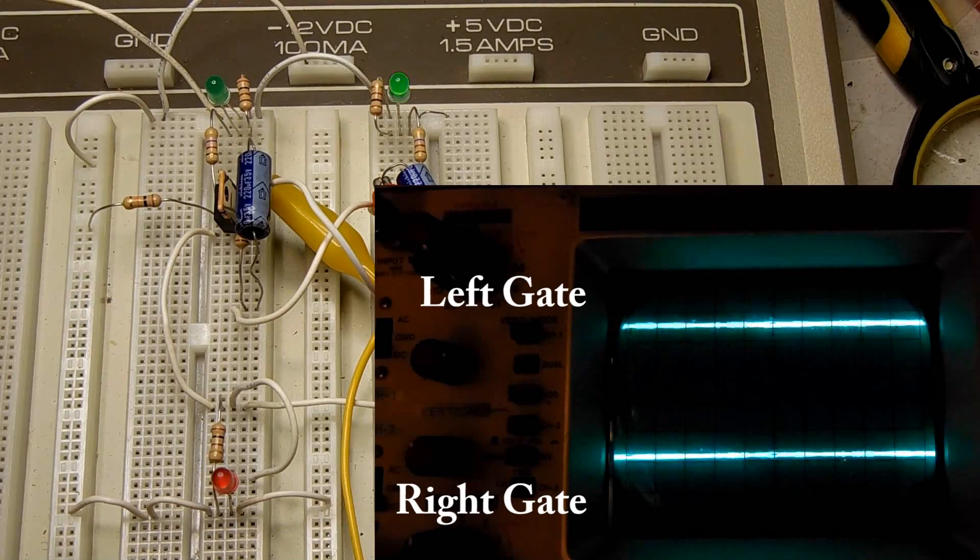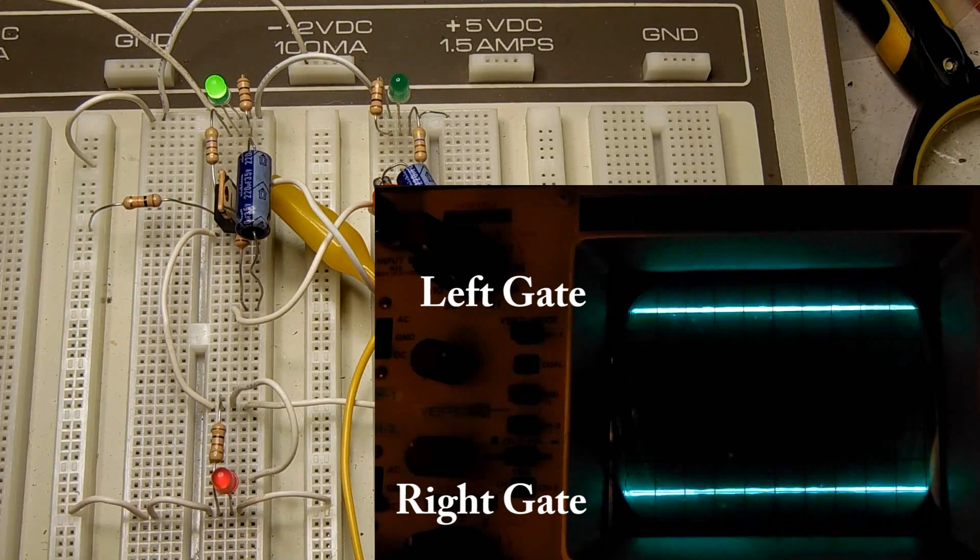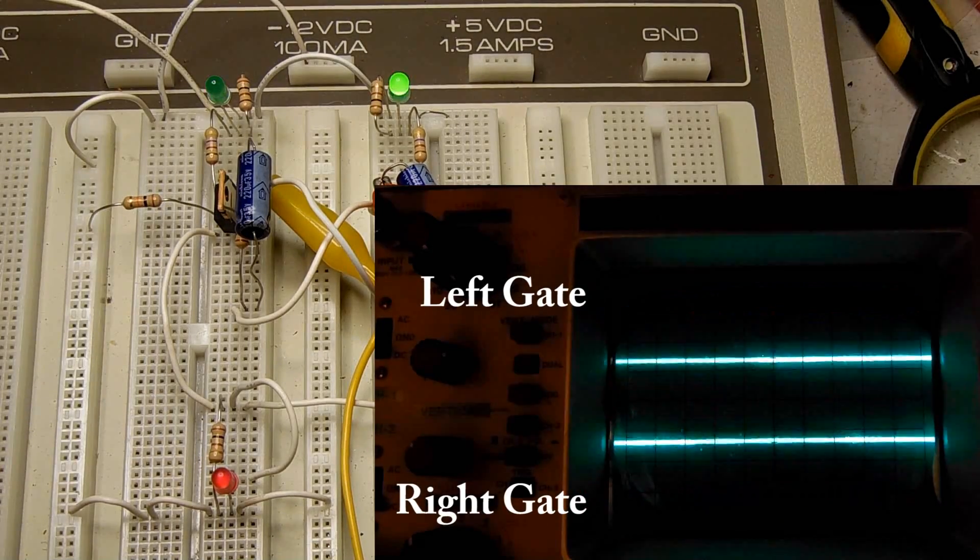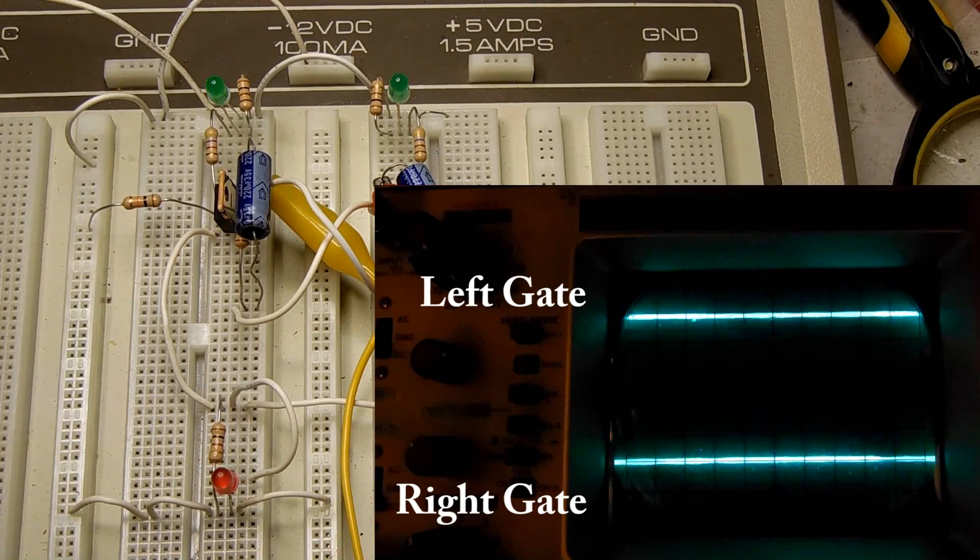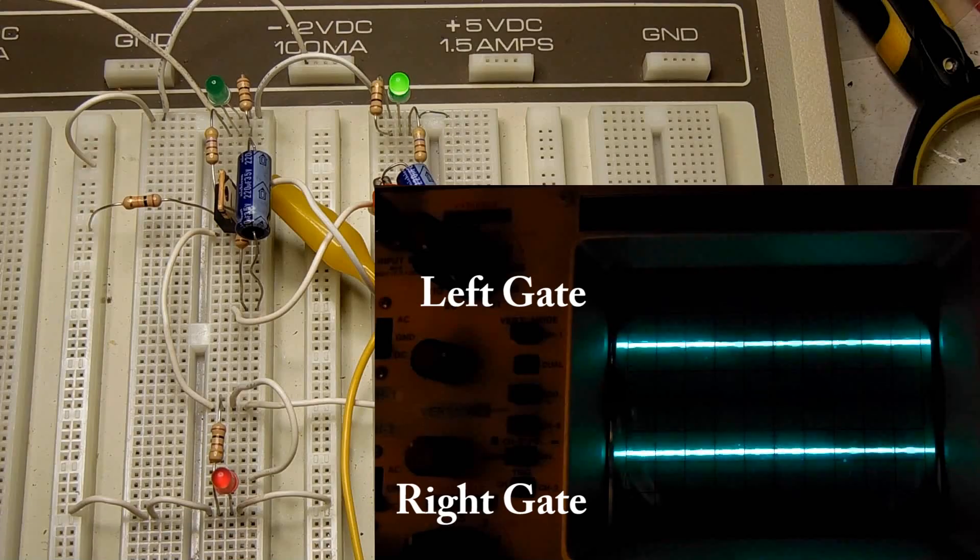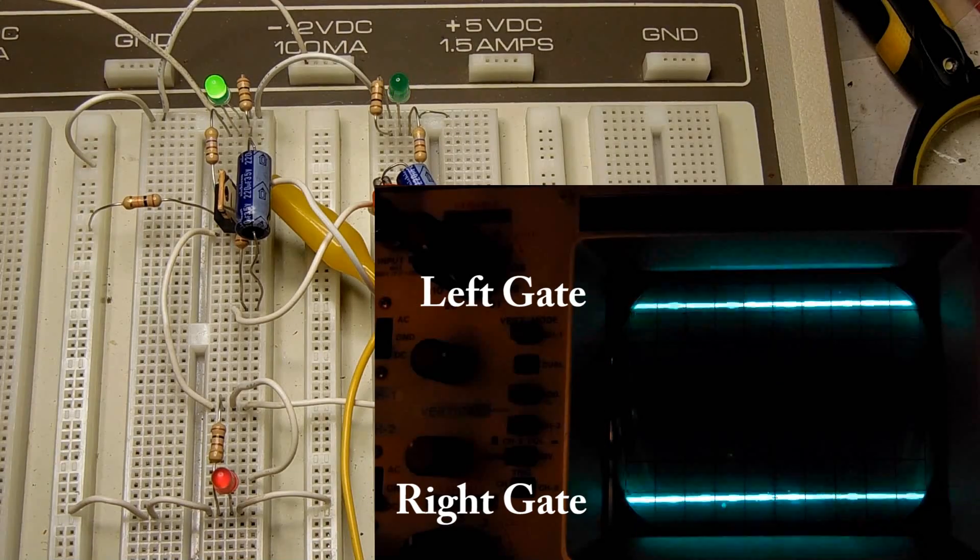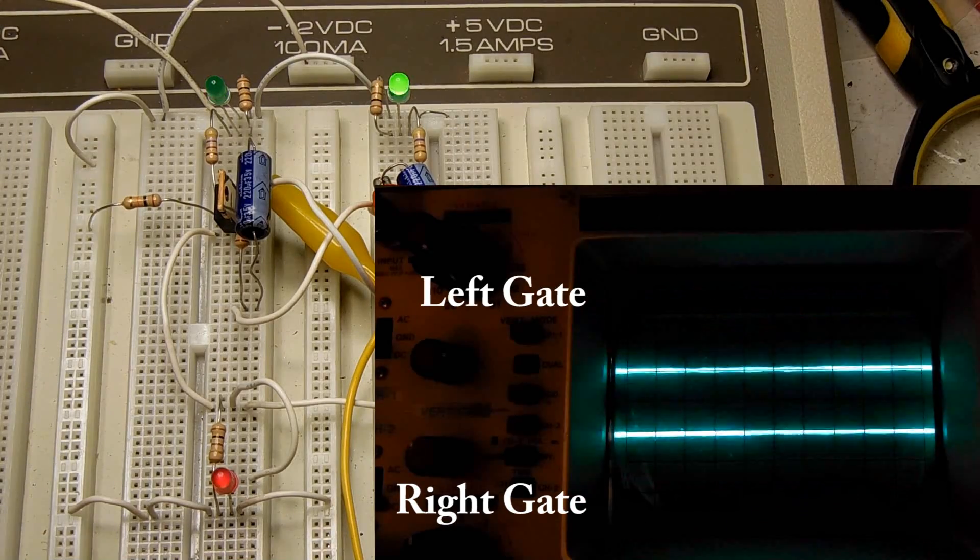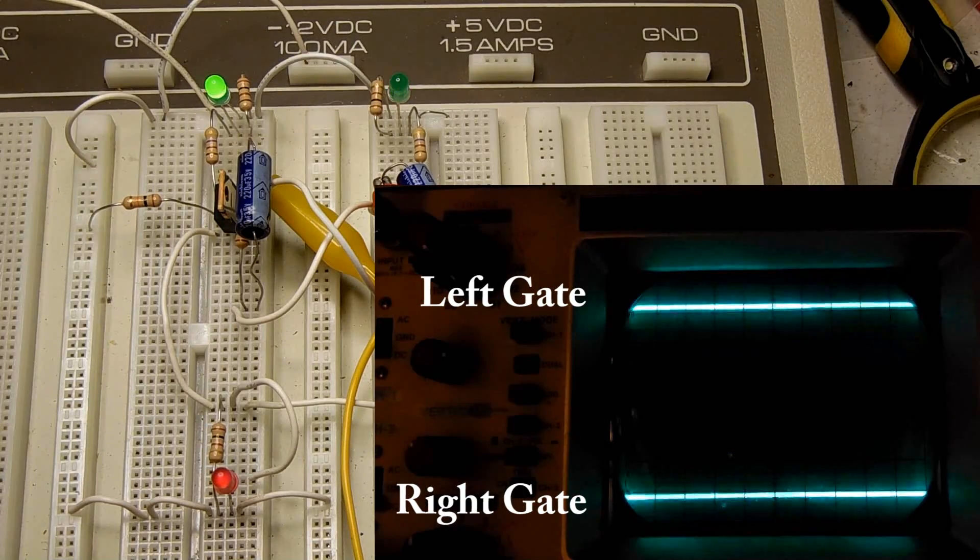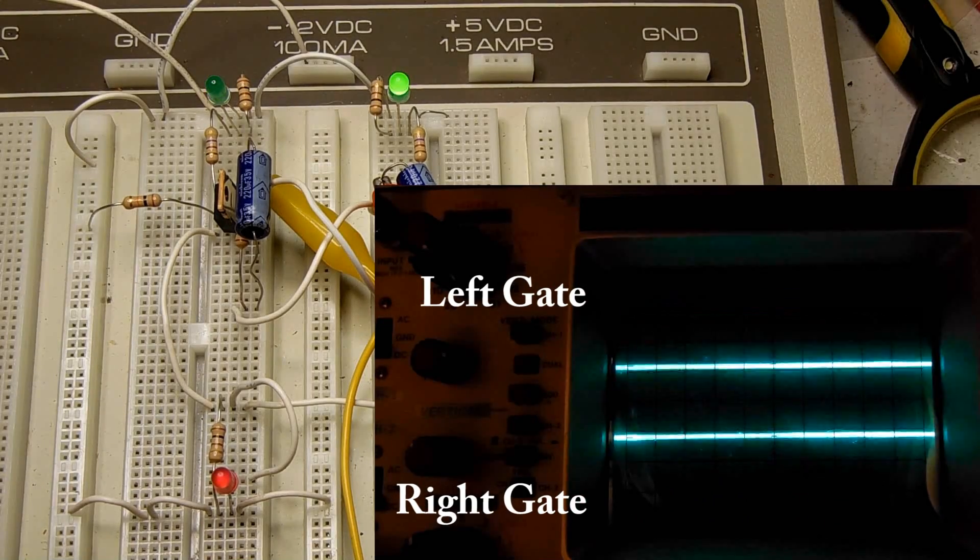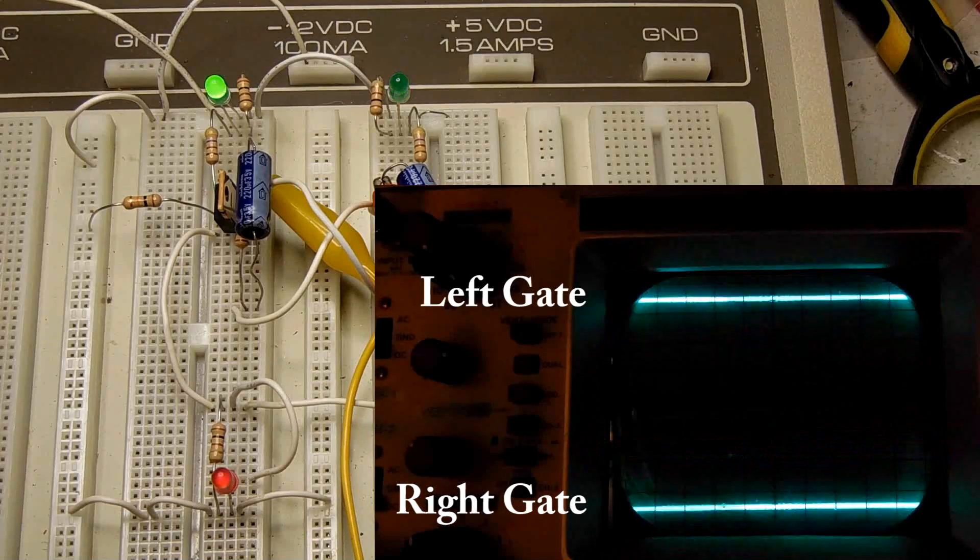The top line is the left MOSFET and the bottom one is the right MOSFET. I've got the scope on DC. When the line moves down, that's when the gate is becoming more negative.